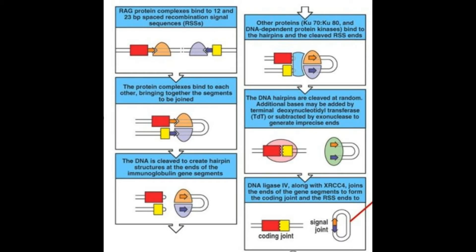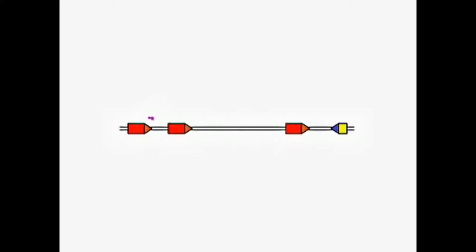Gene segments that can be recombined have specific sequence motifs adjacent to them called recombination signal sequence, or RSS motifs. A protein complex containing RAG1 and RAG2 bind specifically to the RSS motifs, and they initially nick the upstream end of the RSS heptamer, which makes a free hydroxyl group on the coding end.